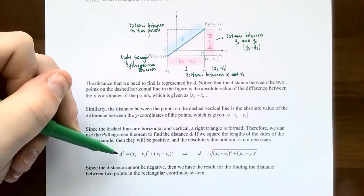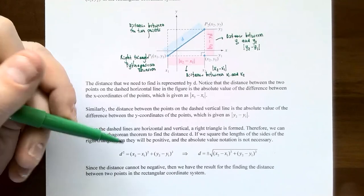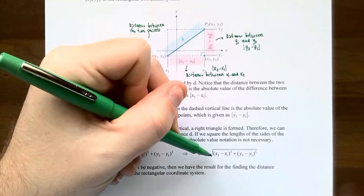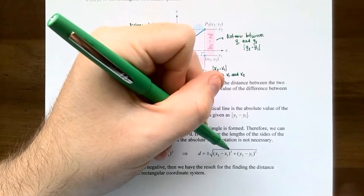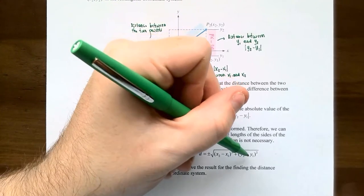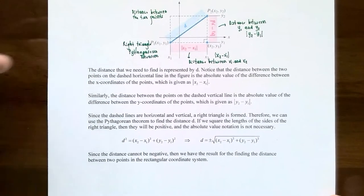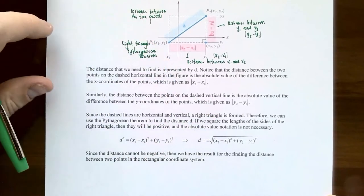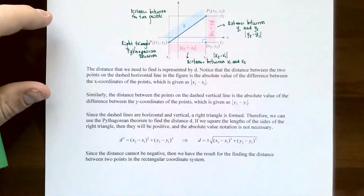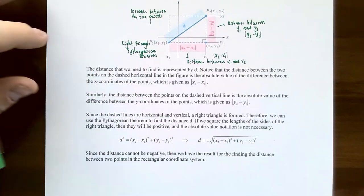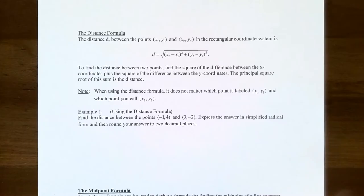Now to find what d is, take the square root on both sides. You have d equals plus or minus the square root of (x₂ minus x₁)² plus (y₂ minus y₁)². But since distance cannot be a negative number — it has to be positive or zero — you can drop the plus or minus and only take the principal square root. So this is what's called the distance formula.